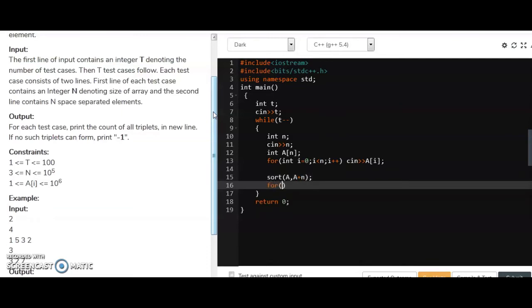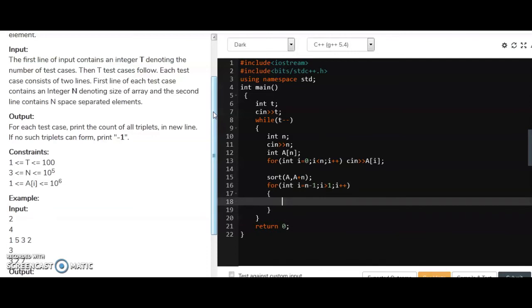Now then make a for loop for iterating. I equals to, but I will start from the end. Right? So i is equal to n minus 1, i is greater than equals to 1, i minus minus. And in this, initially I am initializing j is equals to 0 and k is equals to i minus 1. K will point to i minus 1.